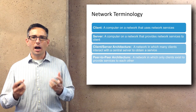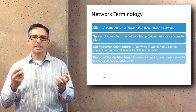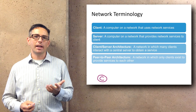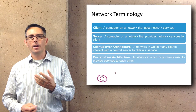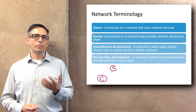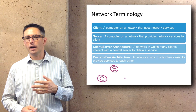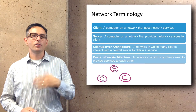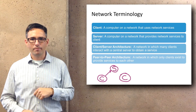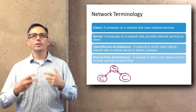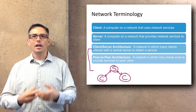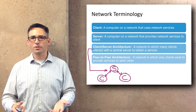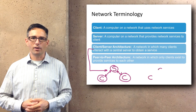A network is often considered to consist of different nodes that act in different roles. A client is a computer on a network that uses services — like a customer in a store. A server is a computer on the network that provides services to clients — like the store itself. Google, for example, is a server and your web browser is a client. A client-server architecture refers to building a program or service in which many people interact with a central server. Search engines and online stores use a client-server architecture.